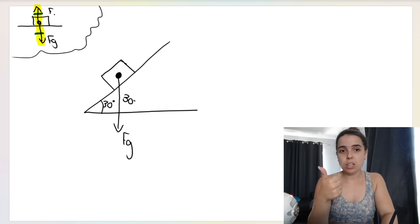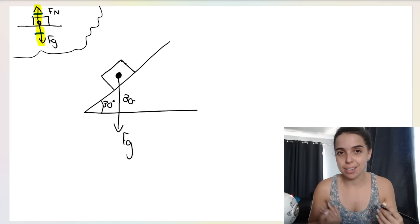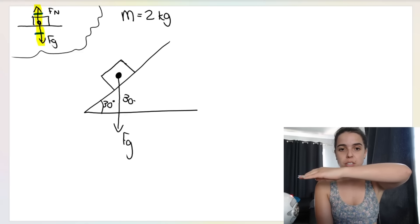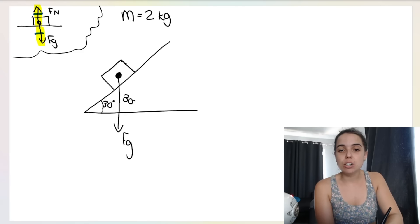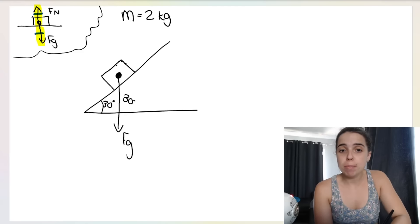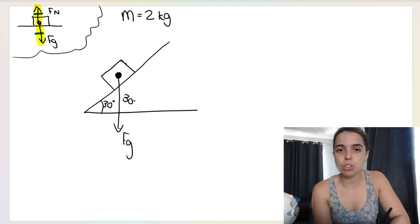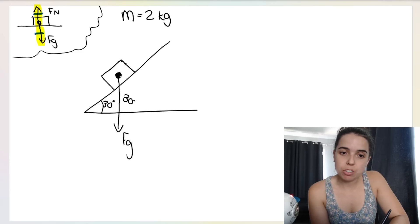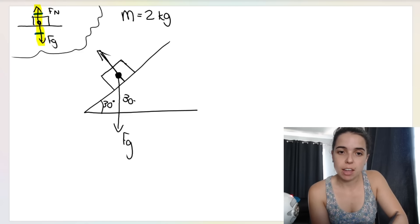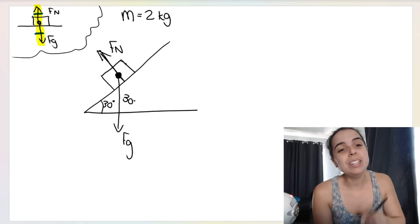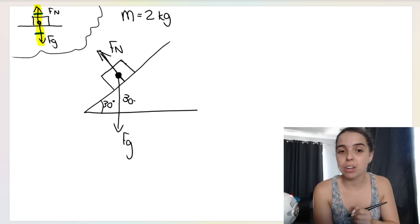Situation number two: what if the object is not on a flat horizontal surface but on a slope? In the previous situation, there were no other forces acting in the Y direction — just weight FG and the normal force. But now let's take the same object — mass still 2 kg — on a slope angled at 30 degrees relative to the horizontal. Remember: weight always acts straight down to the earth, and the normal force always acts 90 degrees perpendicular to the surface.